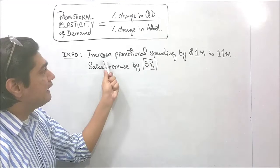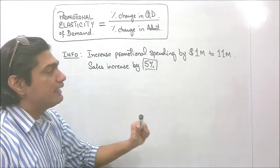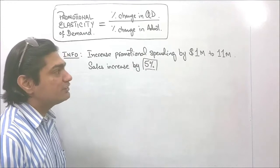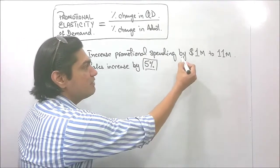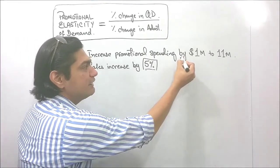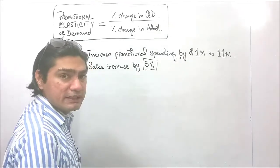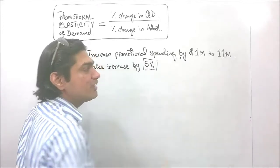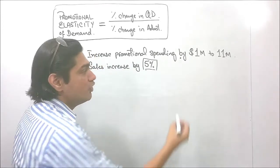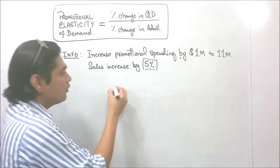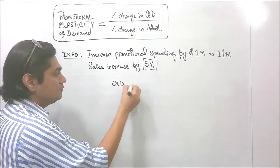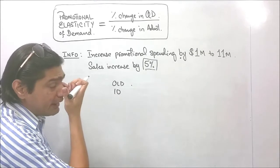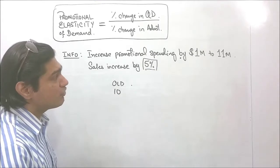On the other hand, the increased promotional spending by 1 million to 11 million — what does this indicate? This indicates that the promotional spending has increased by 1 million. That means after increasing by 1 million, it has now become 11 million, which indicates that the old value is 10 million.